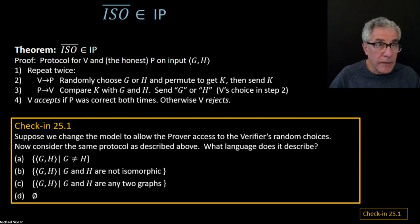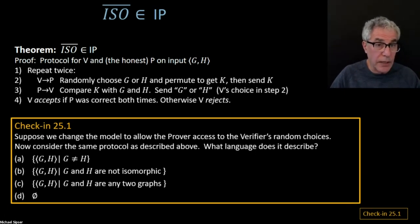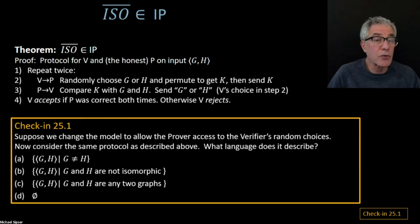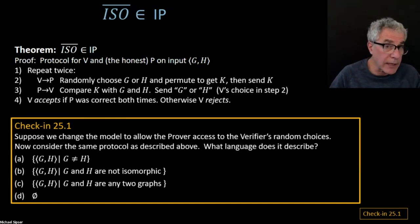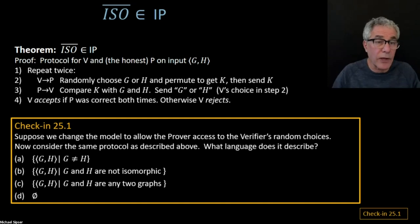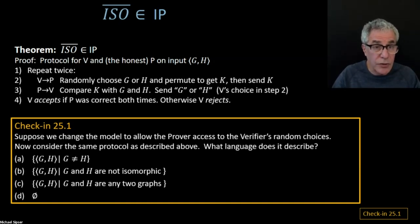Suppose we change the model so that the prover can watch the verifier picking its random choices — so the verifier cannot act in secret anymore, but the prover can watch the verifier. Let's suppose we had the same protocol I just described. What language do we end up with? Is it the same language or a different language, and what is that language? Someone's asking how this connects up with NP — we're going to look at that also in a second.